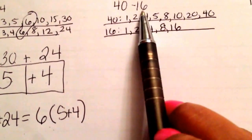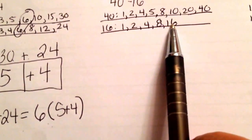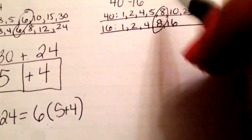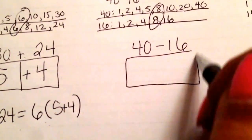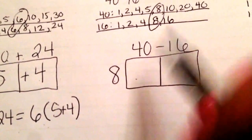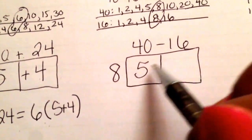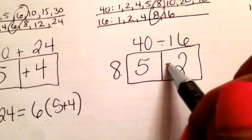So now I have 40 and 16. Again, look at your list. They have 1, 2, 4, and 8 in common. That's the biggest number. So I'm going to draw my box. And I'm going to put the 8 on the outside. 8 times 5 makes 40. 8 times 2 makes 16. Because this is a minus sign, I have a minus here.